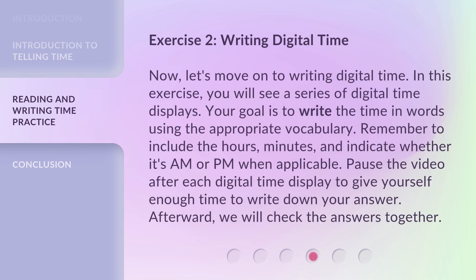Exercise 2: Writing Digital Time. Now, let's move on to writing digital time. In this exercise, you will see a series of digital time displays. Your goal is to write the time in words using the appropriate vocabulary. Remember to include the hours, minutes, and indicate whether it's A.M. or P.M. when applicable. Pause the video after each digital time display to give yourself enough time to write down your answer. Afterward, we will check the answers together.